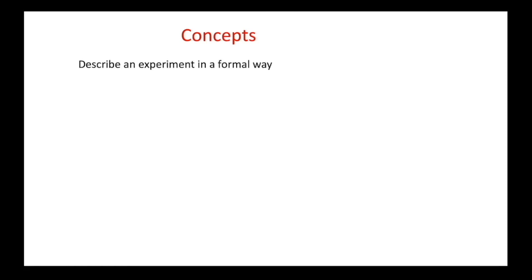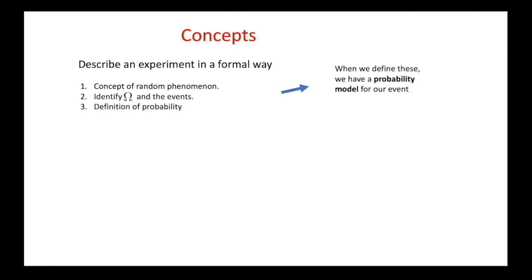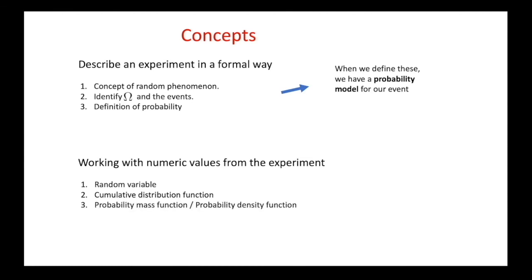This is all for today's video — hope you managed to follow along. Let's quickly sum up what we have learned. First, we saw how a random experiment is described formally through the notions of random phenomenon, sample space, events, and probability — together forming a probability model. In the second part, we introduced fundamental notions for working with numeric values: random variable, cumulative distribution function, probability mass function, probability density function, and we concluded with mean and variance. Thank you for spending this time with me — let me know what you think and what you'd like to see next. Don't forget to like and subscribe to the channel!